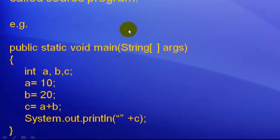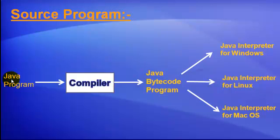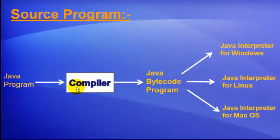Now these codes must be converted into machine-readable form. The Java program or source program that we have written is forwarded to a special piece of software that we call a compiler. The compiler converts our source programs into Java bytecodes. But before converting the source program into bytecodes, the compiler makes sure that our program is error-free — that there is no syntax error in our program.